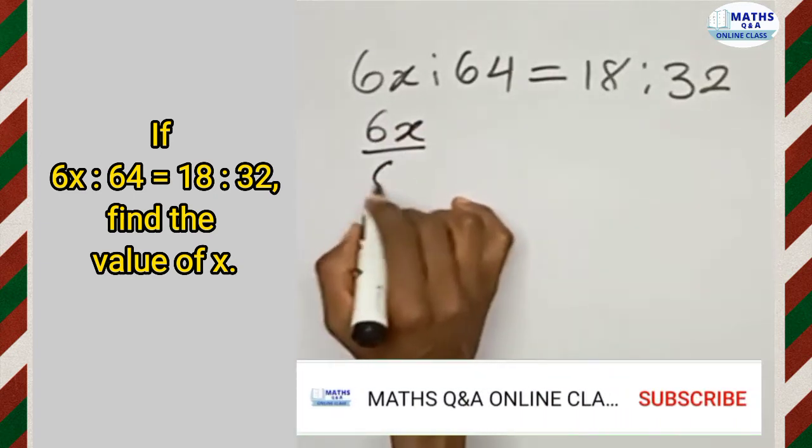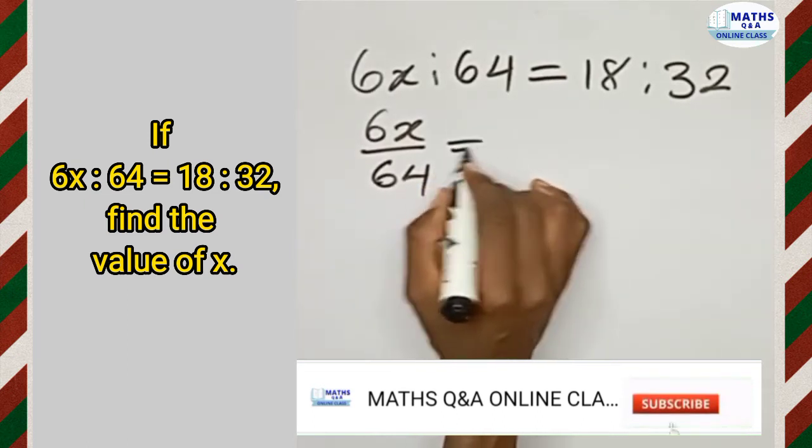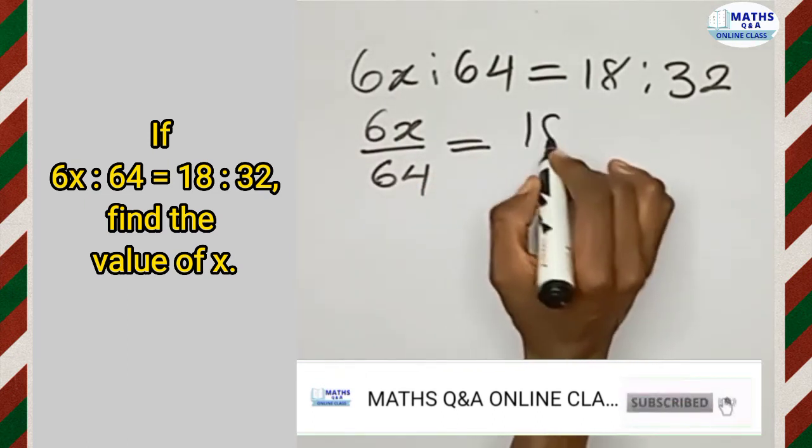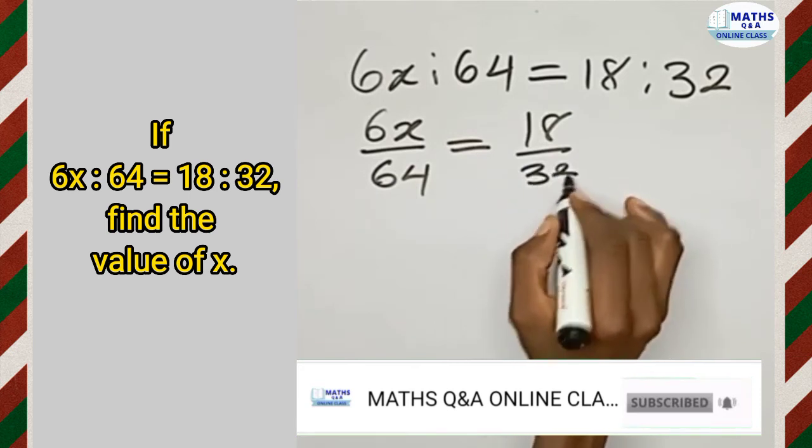6x will be divided by 64, and that should be equal to 18 divided by 32.